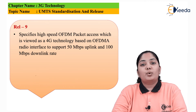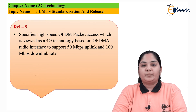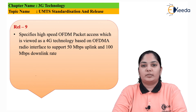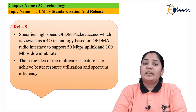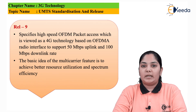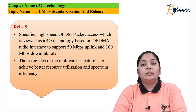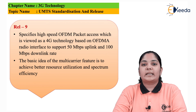Release 9 specifies OFDM packet access, which is basically the 4G technology based on the OFDM radio interface. This allows data throughput of 100 Mbps in the downlink and 50 Mbps in the uplink direction. The basic idea of multi-carrier is to improve spectrum efficiency and better utilization of resources. OFDM, orthogonal frequency division multiple access, uses multiple carriers to transmit information, and because all carriers are orthogonal to each other, we achieve better spectrum efficiency due to that orthogonality.